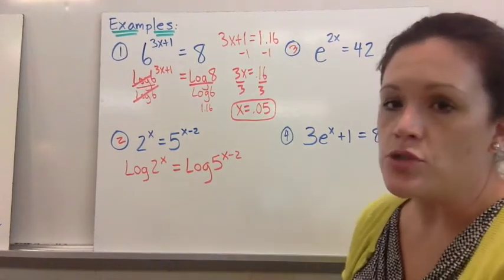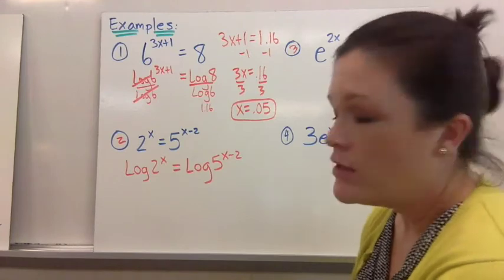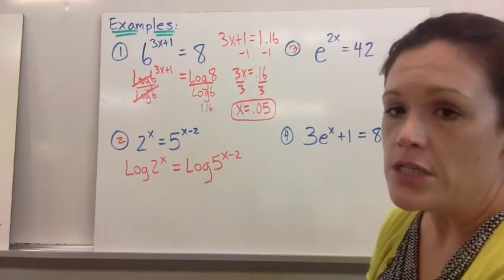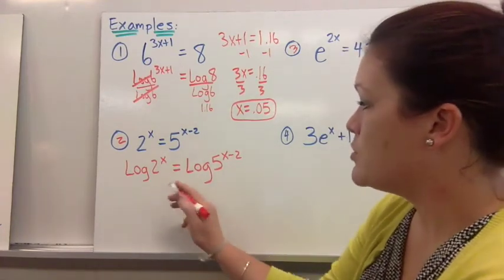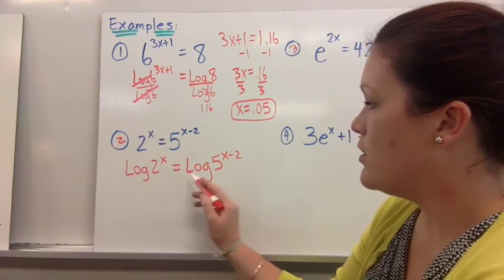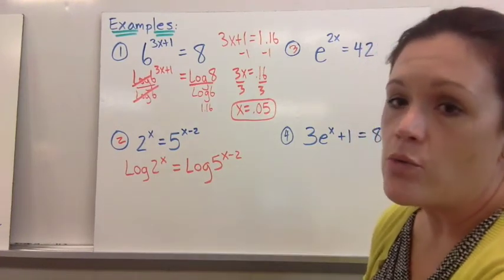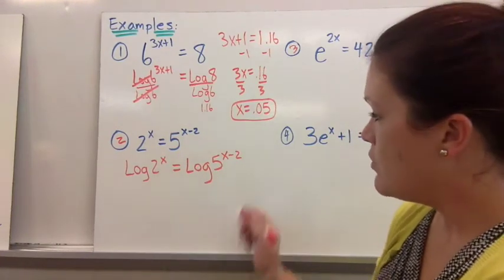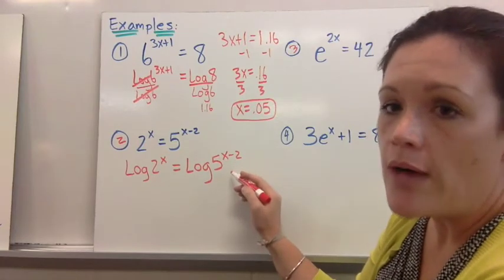Log is the inverse of exponential so it helps us get rid of the fact that this is an exponential equation and we need it to be solvable. So log of 2 and log of 5, you can divide by either one. I normally try to divide by the one that has more going on in the exponent so I don't have to distribute the decimal that I'm going to get in the calculator.